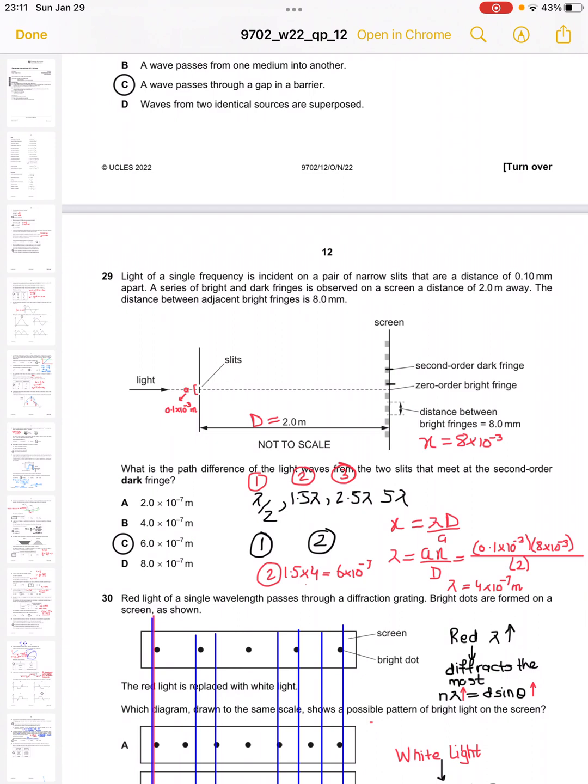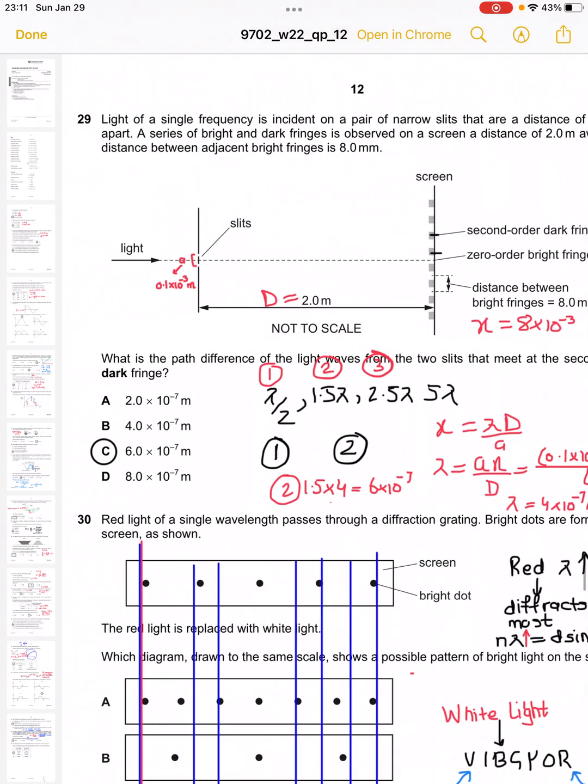At second order, we must know that the conditions for the path difference of destructive interference is lambda by 2 for first order, 1.5 lambda for second order, 2.5 lambda for third order, and so on. For the second order, we need to evaluate 1.5 lambda.